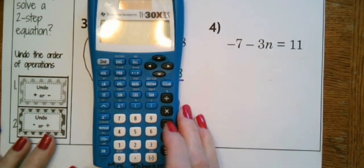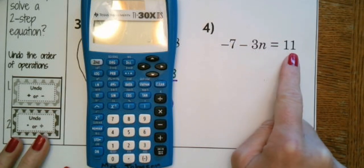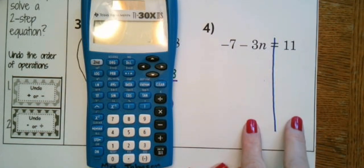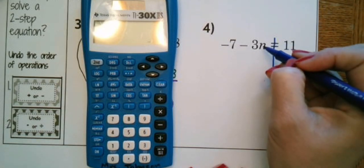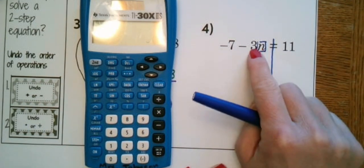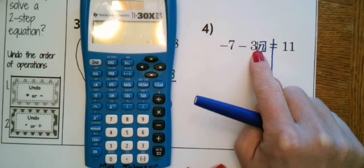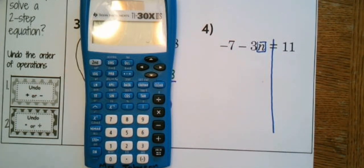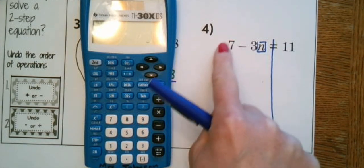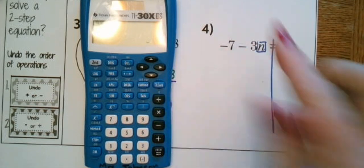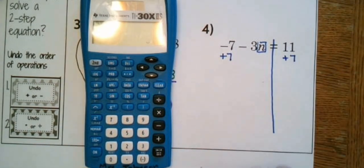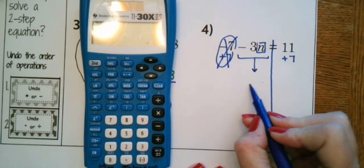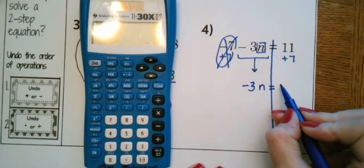Number four: negative 7 minus 3 times N equals 11. Let's solve this one. Line on the equal sign — this helps keep our work nice and straight. We are the N, attached to our closest friends with multiplication. Look in front of that three — there's a negative, so we have three negative closest friends. Way over here, the negative seven are our acquaintances. Dad comes down — we're sending home the negative seven acquaintances with the inverse, positive seven, to both sides. Positive seven and negative seven cancel. Bringing down: negative 3N equals 11 plus 7, which is 18.